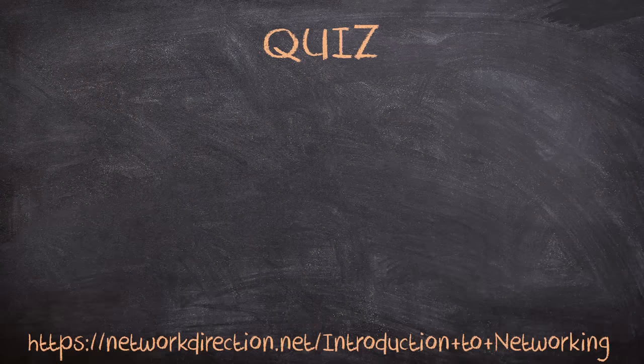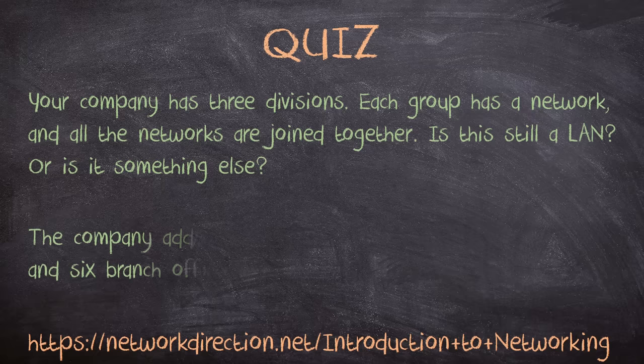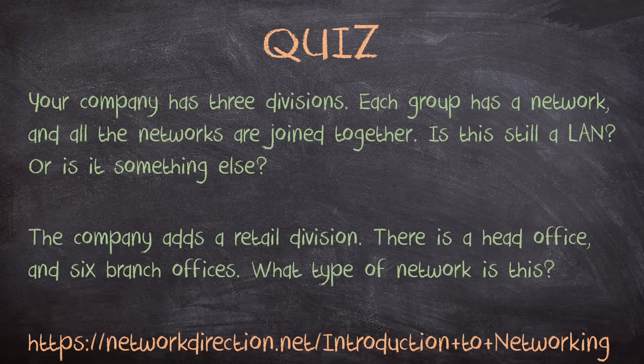And once again, it's time to get the brain working. You work for a company that has a finance division, an engineering division, and an admin division. Each group has their own network, and the networks are joined together. Is this network still a LAN, or is it something else entirely? The company grows and adds a retail division — in addition to the head office, there are now six branch offices. What type of network is this? Go to the link below to see the answers.